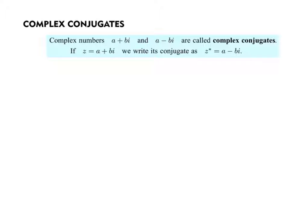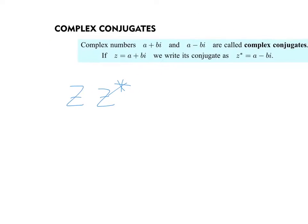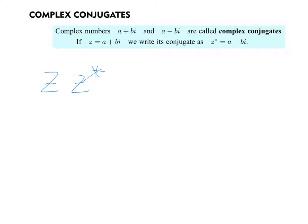That just enables us to have a shorthand for talking about the complex conjugate. So, for example, if they want you to take a complex number and multiply it by its conjugate, they'll do something like this so that we can see that we're multiplying a number times its conjugate. That's what that z star represents.